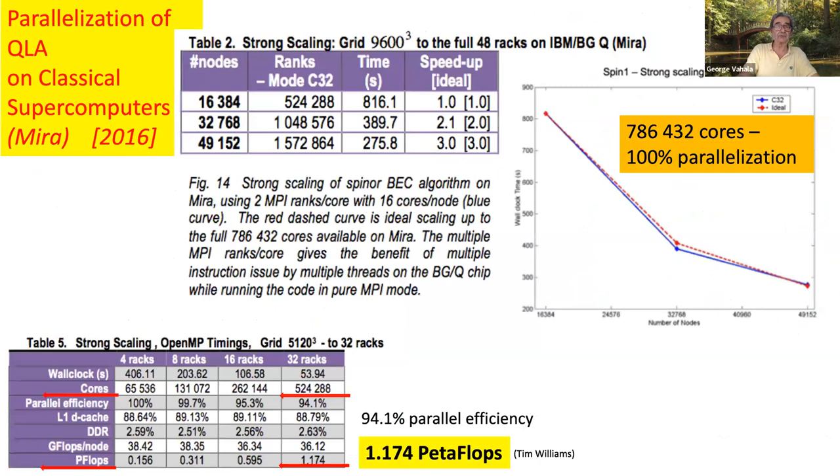The idea of the algorithm was that while it will be able to run on a quantum computer, it's ideally parallelized on a classical computer. And for example, on Mira, we ran over half a million cores, and the parallelization was 94.1%, and it was over one petaflop.